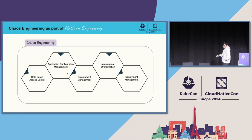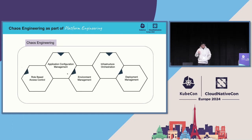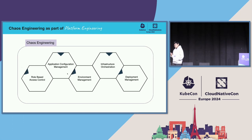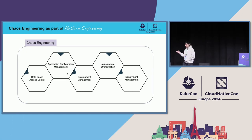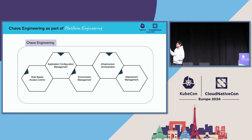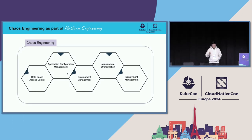Coming back to the core components of the IDP: chaos engineering can be introduced in every single segment of every single platform engineering component. For role-based access control, you can check who has permission for what kind of chaos. For application configuration — the most common use case — you can check if environment variables passed as part of the platform are actually being received, or if a missing entry could break your system. You can also target infrastructure such as VMs, bare metals, and Kubernetes execution layers, and you can introduce chaos at every stage of your deployment pipeline.